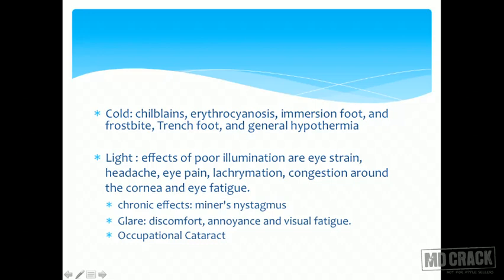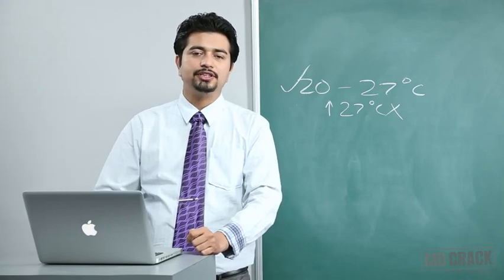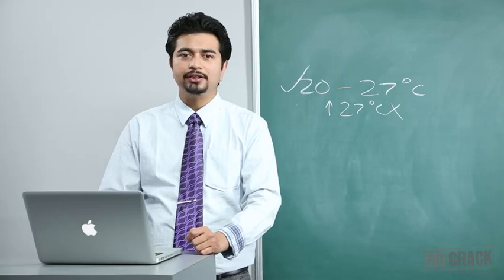Glare is defined as excessive light. When goggles cut out glare, they cut out excessive light. Glare causes discomfort, annoyance, and visual fatigue. Some occupations also make a person prone to occupational cataract — for example, farmers, because ultraviolet radiation is a known risk factor for cataract development, and farmers work all day long outside and are thus prone to occupational cataracts.